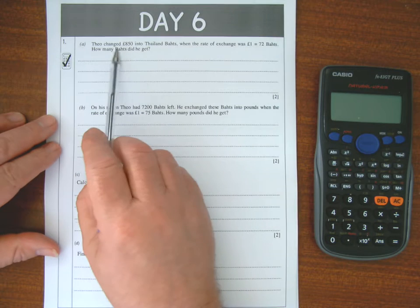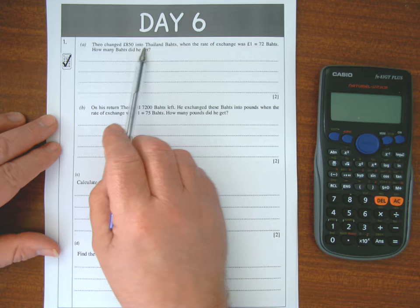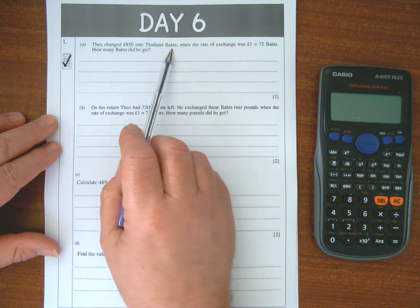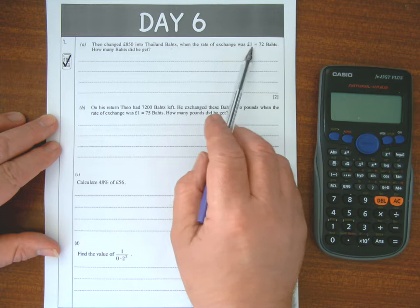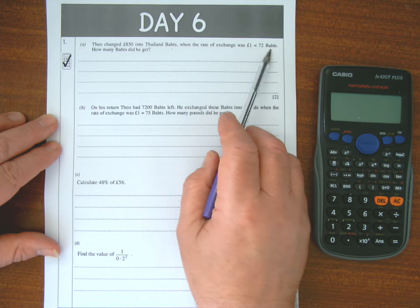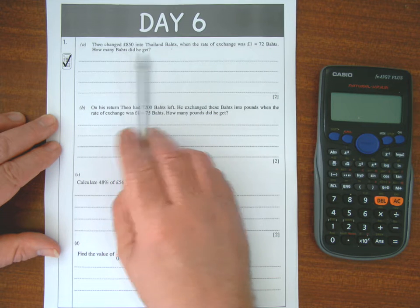Okay, so when Theo changed £850 into Thailand Baht when the exchange rate was £1 to 72 Baht, how many Baht did he get?